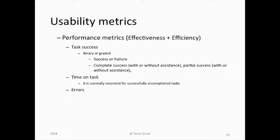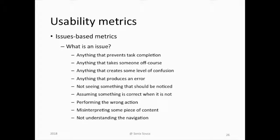Another way to measure efficiency and effectiveness is to measure time — how long does the user take to finish certain tasks. We establish an average time to finish the task; if the user finishes within that average time, we consider it a successful task, otherwise it needs improvement. Another way to measure is counting errors. We can also look for issues using issue-based metrics: anything that prevents the task from being completed, takes someone off course, or creates confusion.